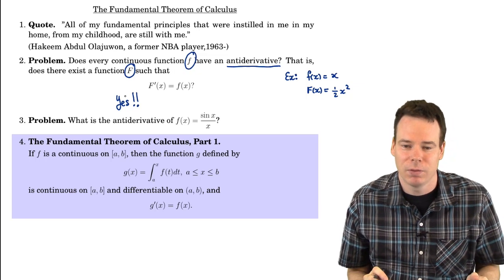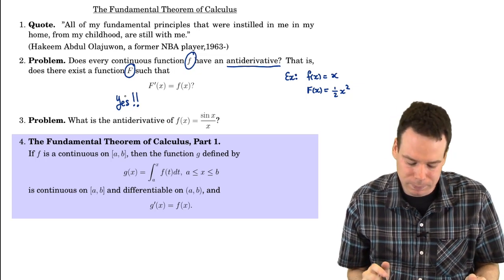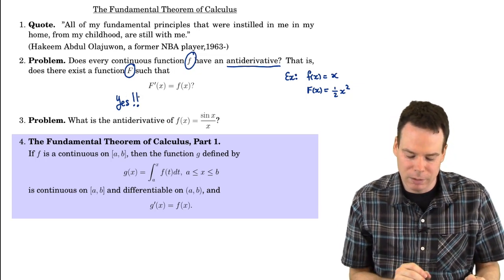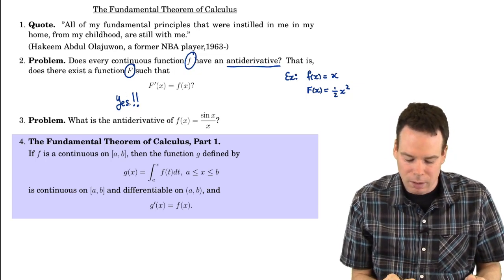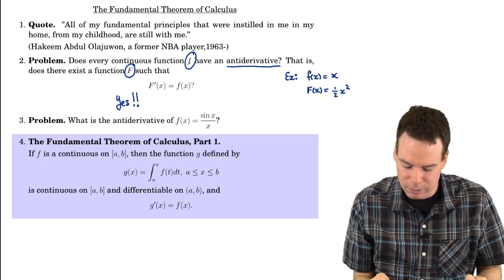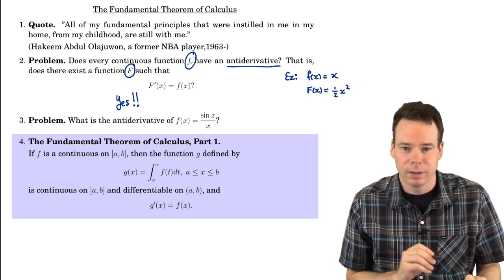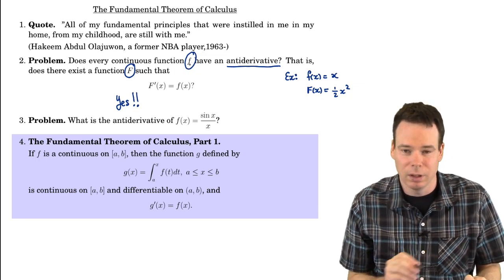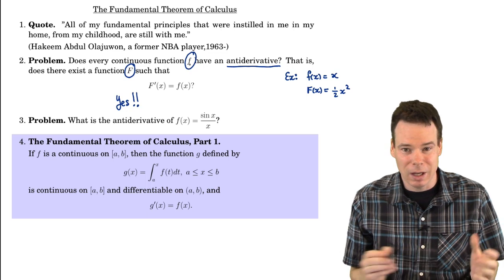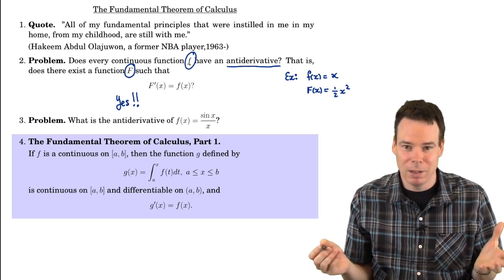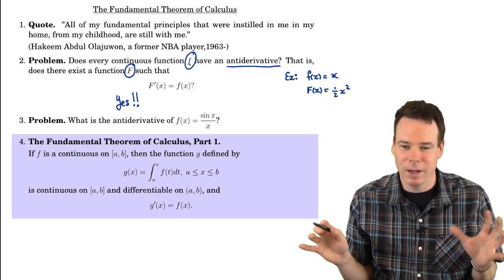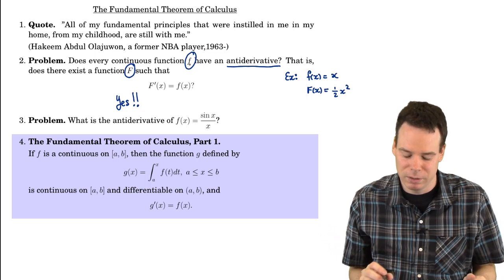And this is actually the fundamental theorem of calculus. What might be surprising is that although the answer is affirmative — yes, every continuous function little f has an anti-derivative — sometimes we might just not be able to find them, or find them in a certain sense.